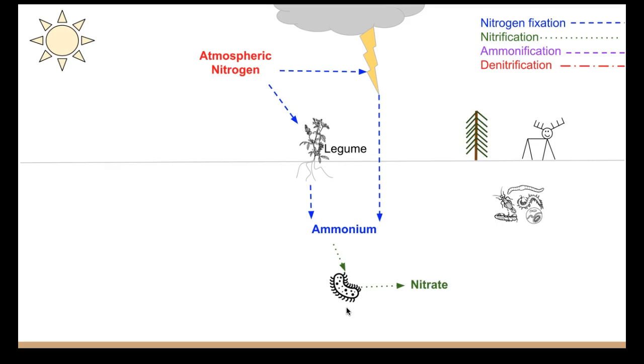Once we have that nitrate, it can be absorbed by organisms like trees and plants. They can use it within their roots and their stems and their leaves. When organisms eat the roots and the stems and leaves, they are going to get some of that nitrate. When these organisms die and become decomposed, we put the nitrogen back in the soil.